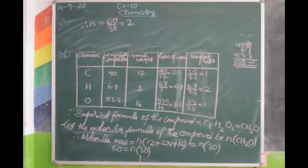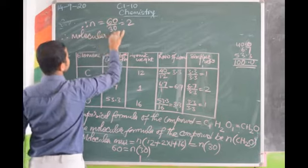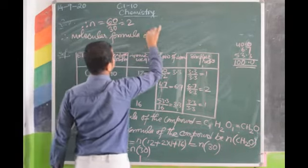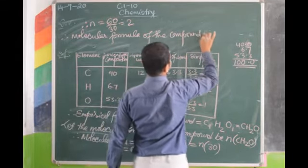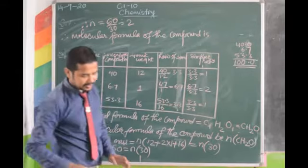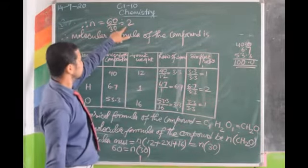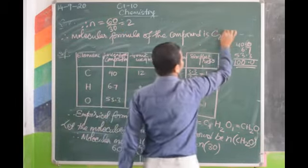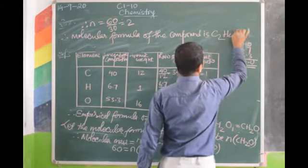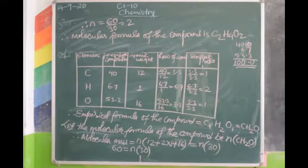We know molecular mass is 60. So 60 = N × 30, therefore N = 60 ÷ 30 = 2. Therefore the molecular formula is C2H4O2, obtained by multiplying all subscripts by N = 2.